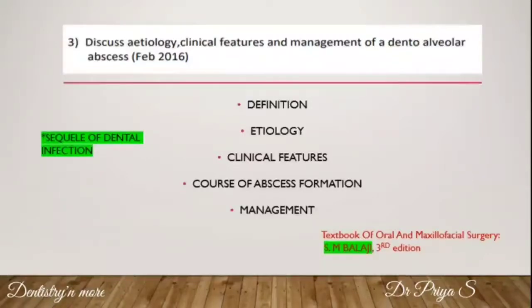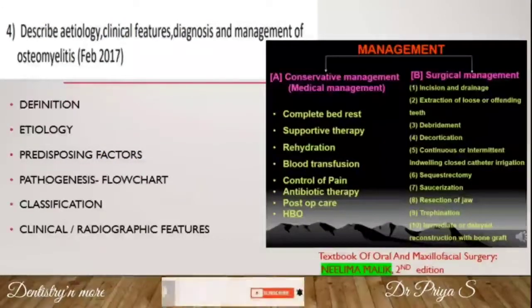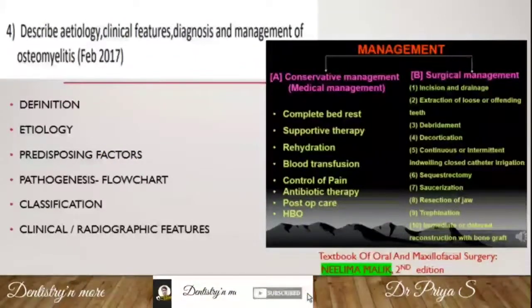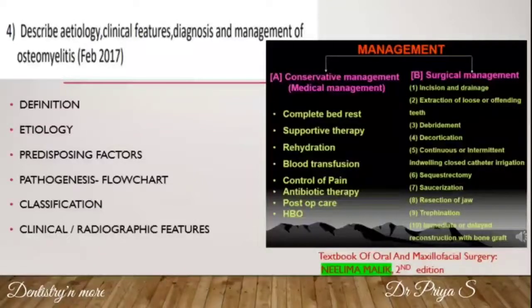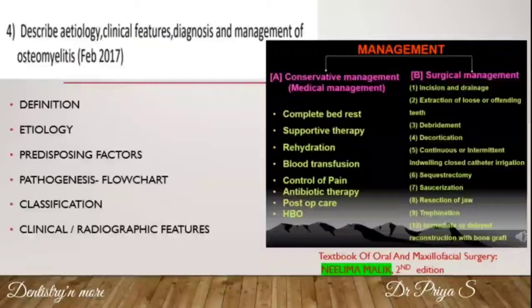Another important and frequently asked question is osteomyelitis. It can be asked for a long essay or a short essay, and the management aspect alone can be asked for a short essay. For a long essay, include the definition, etiological and predisposing factors, and the pathogenesis of osteomyelitis, which should always be represented in a flowchart.